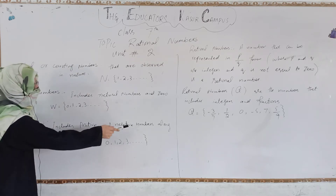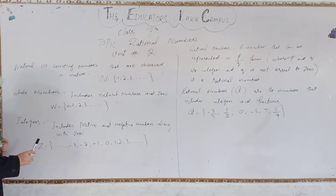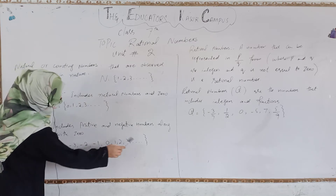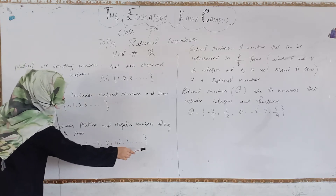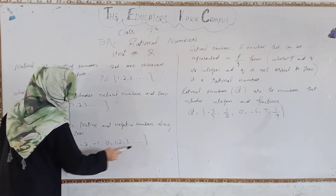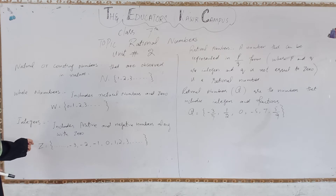Along with zero, integers include both positive and negative numbers. We denote integers with the capital letter Z. This means we have zero in the center, positive numbers on the right side like 1, 2, 3, and negative numbers on the left side like minus 1, minus 2, minus 3, and so on.